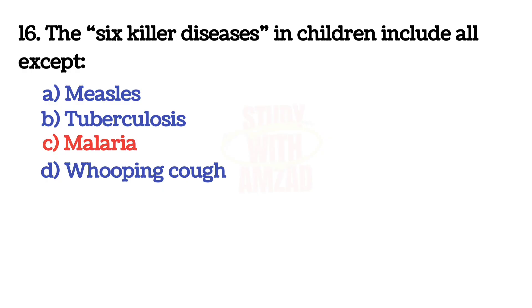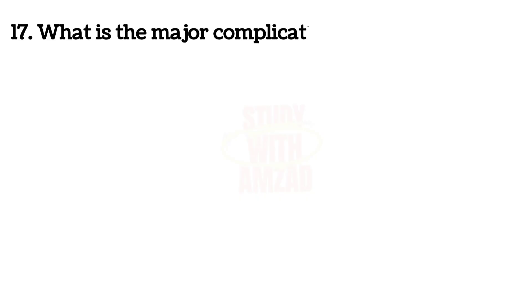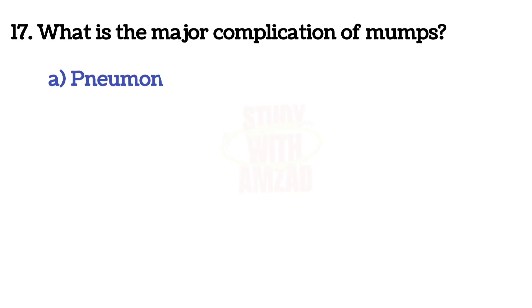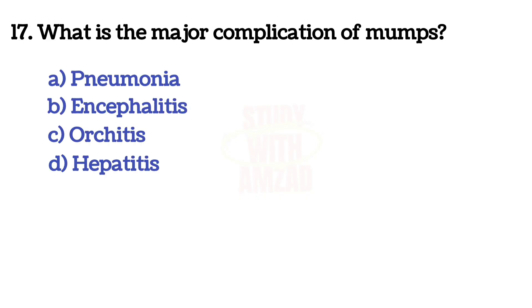Next question: The six killer diseases in children include all except? The answer is C — malaria. Next question: What is the major complication of mumps? The correct answer is C — orchitis.